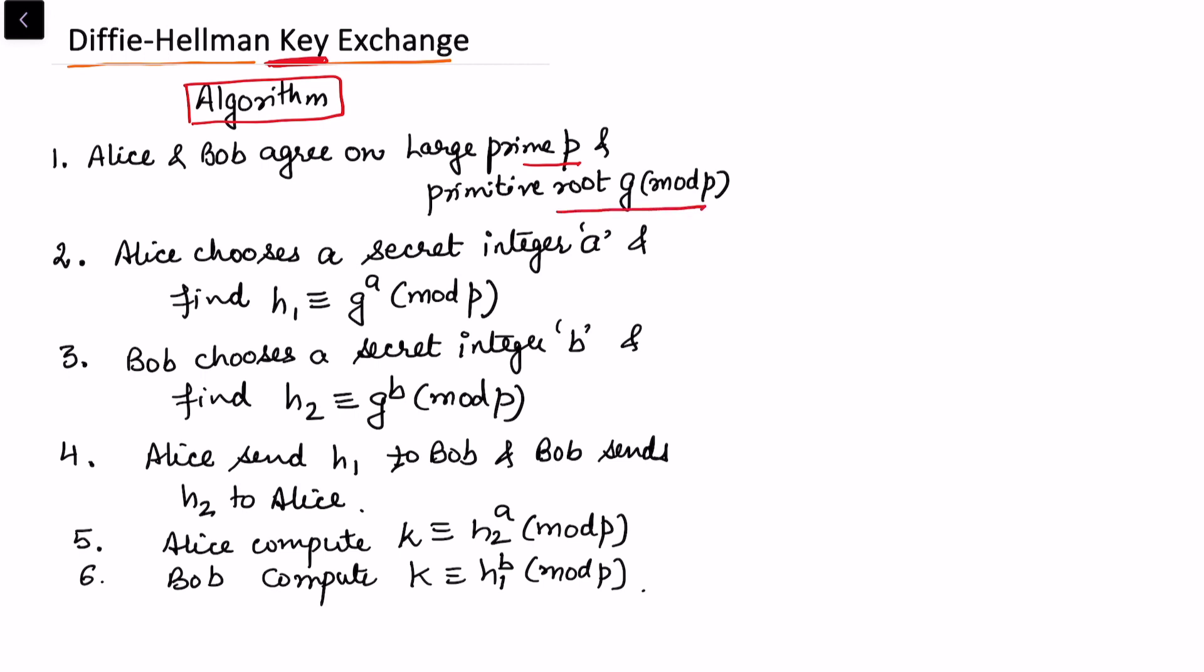Alice chooses a secret integer a and finds h1, which is congruent to g to the power a mod p. This relates to the discrete log problem I explained in an earlier video. Bob chooses a secret number b and finds h2.